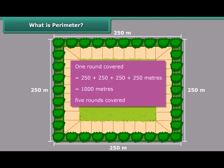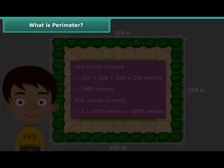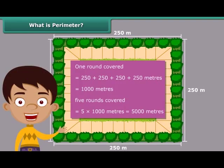Therefore, in five rounds, you covered 5 into 1,000 meters — that is 5,000 meters, or 5 kilometers. Now you are ready to answer your mother's question.